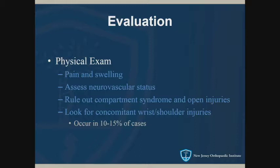Also feel the compartments in the forearm — they'll probably be swollen, but you want to make sure they're compressible and you're not worried about compartment syndrome. Look for open injuries. Those three things — vascular compromise, compartment syndrome, and open injury — would constitute emergencies, in which case send the patient immediately to the ER. Also look for associated wrist and shoulder injuries; 10 to 15 percent of the time there's another injury.